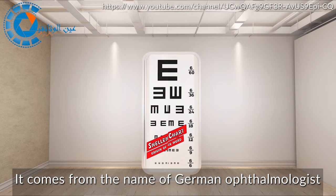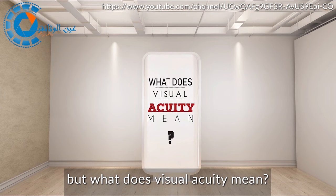Snellen chart. Origin of the word. It comes from the name of German ophthalmologist Hermann Snellen who invented that chart to test visual acuity.